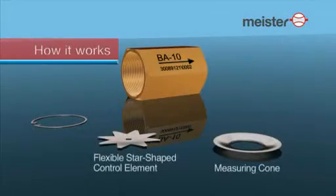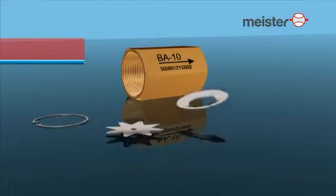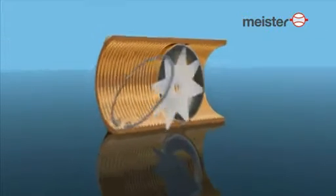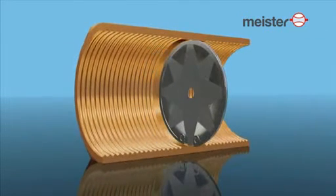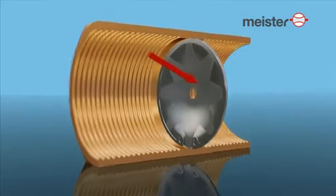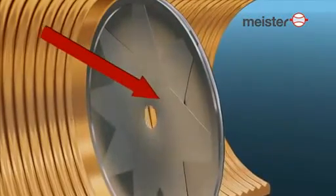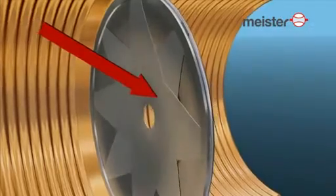The Meister flow limiter consists of a measuring cone and a flexible star-shaped control element. As the pressure differential increases, the control element is pushed into the cone, reducing the cross-sectional area. The flow rate remains unchanged.